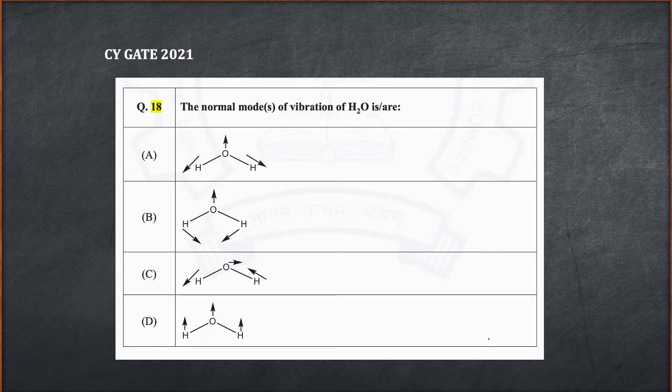In this video we will be discussing question number 18 from Chemistry GATE exam 2021. The question is: the normal mode or modes of vibration of H2O is or are. There are four options given here and we have to find out which are the actual normal modes of vibration for H2O molecule. So let's see how to solve this problem.